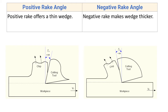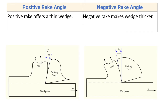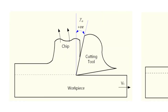The second difference: positive rake offers a thin wedge. Here you can see the wedge, or the tip, of the cutting tool. When the rake angle is positive, this positive rake angle makes the wedge thinner. As this angle is positive, due to this positive rake angle the wedge of the cutting tool gets thinner.